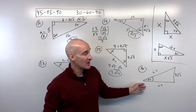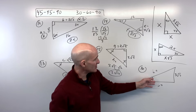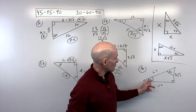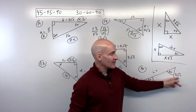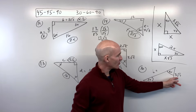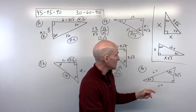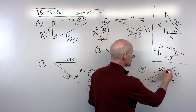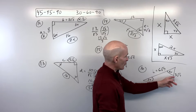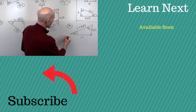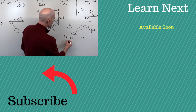For the last problem, another 30-60-90, and they're giving us the short leg — the one across from the 30-degree angle. To get to the hypotenuse, double it: that's 6√7. To go from the short leg to the longer leg, multiply by √3: 3√7 times √3 gives 3√21.